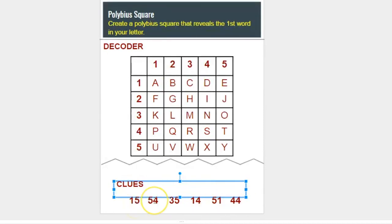So 15 is E, 54 is X, 35 is O, 14 is D, 51 is U, and 44 is S.